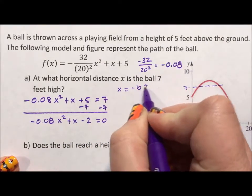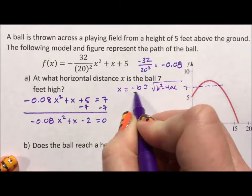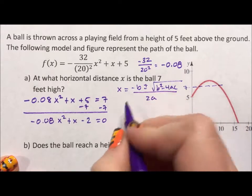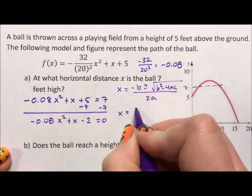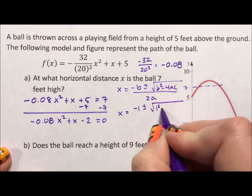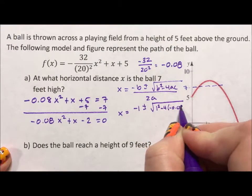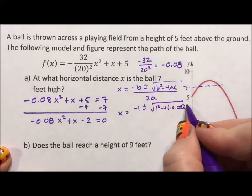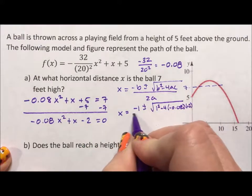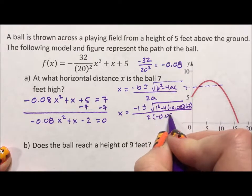x equals negative b plus or minus the square root of b squared minus 4ac all over 2a. So I'm gonna say x is equal to negative 1 plus or minus the square root of 1 squared minus 4a is negative 0.08, c is negative 2 all over 2a, which is 2 times negative 0.08.